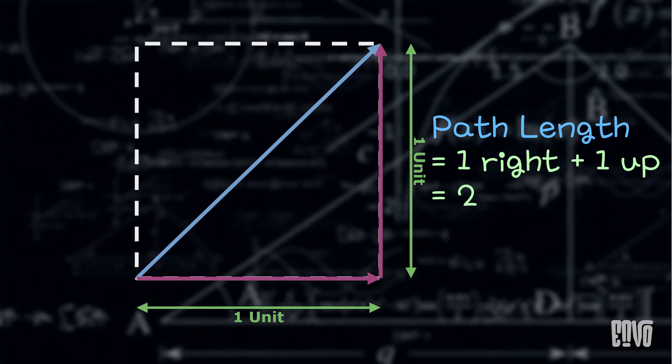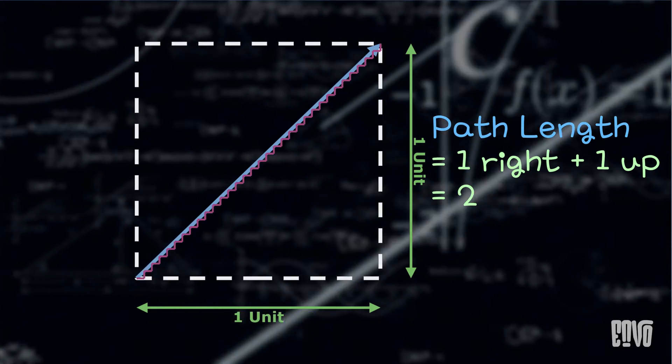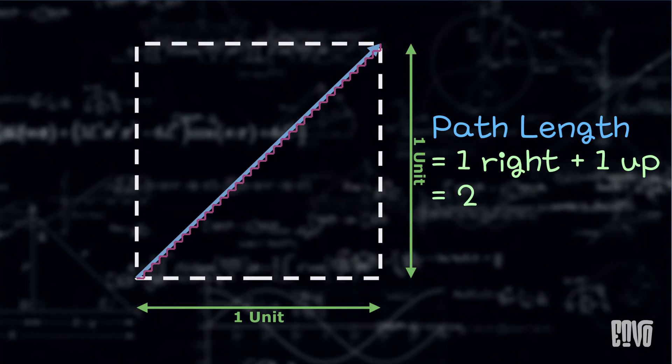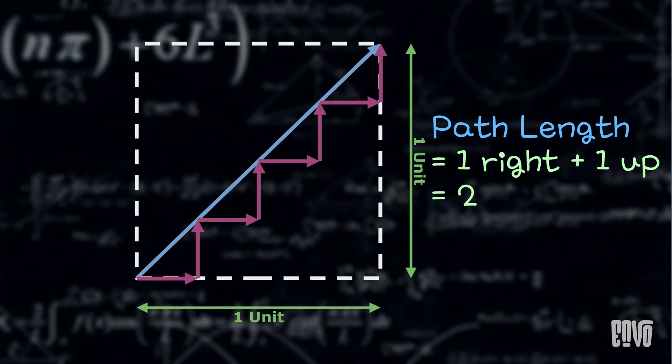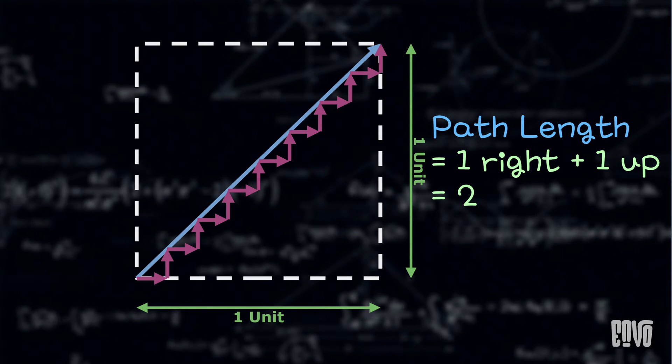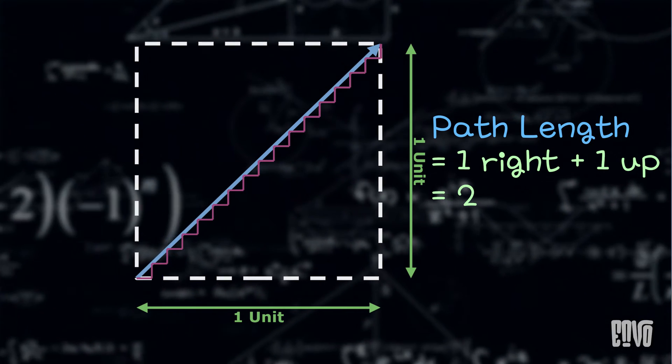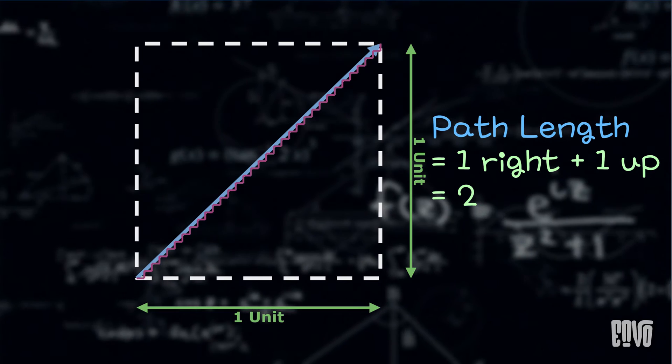This is the staircase paradox. The sequence of staircase curves converges point-wise to the diagonal, meaning every point on the diagonal is approached by points on the staircases. But the sequence of their lengths does not converge to the length of the diagonal.